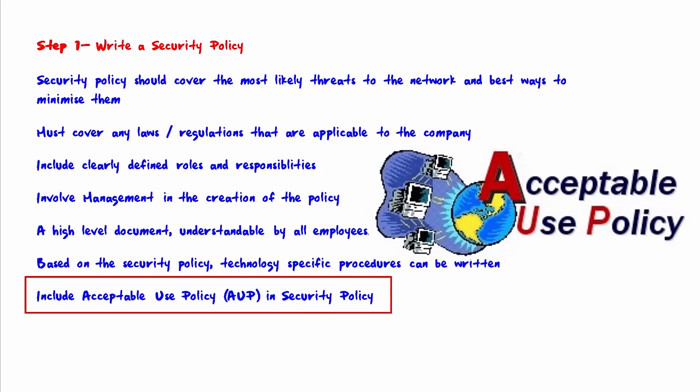Lastly, you want to make sure to include an acceptable use policy — that's AUP — in the security policy. An acceptable use policy is very specific, indicating to end users exactly what they are allowed to do on the network and what they're not allowed to do. For example, they might be allowed to use the internet for personal purposes, or maybe they're not. Likewise with email. Usually new employees will be required to sign the acceptable use policy at the time they're being hired, to indicate that they understand it and will abide by it.